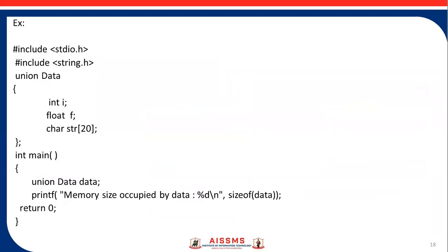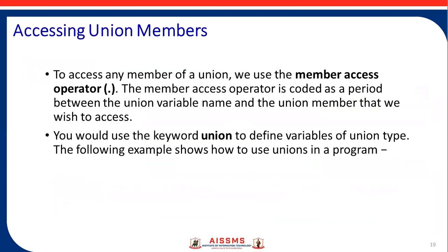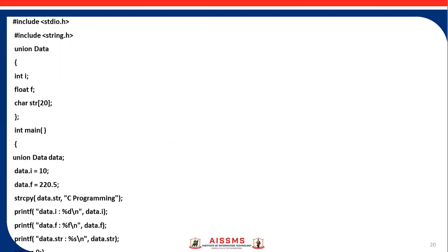This is an example using the sizeof operator. Accessing union members: to access any member of a union, we use the member access operator — the dot operator. The member access operator is coded as a period between the union variable name and the union member we wish to access. You use the keyword union to define variables of a union type. The following example shows how to use the union in a program.